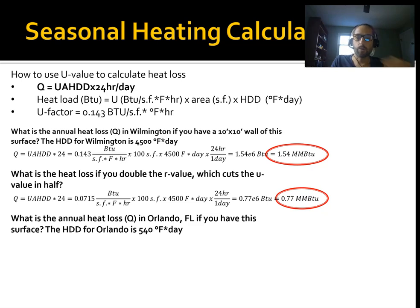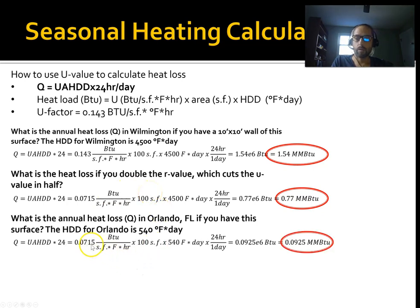Let's take the same surface, but down in Florida. And the HDD for Orlando, Florida is 540. What happens if we go 100 square feet at a 0.0715 U factor in Orlando? So you take the 0.0715 is the U, the area in square feet, and this time we're multiplying times 540 times 24, and we end up with 0.0925. You can see it's dropping here. We decrease the U, and it's going to drop our heating load. If we decrease the HDD, it's going to drop our heating load.